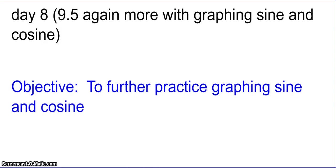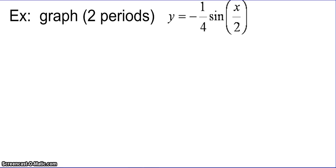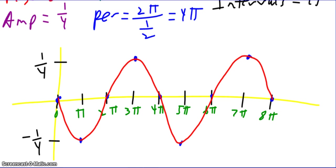Today we're going to look more at section 9.5 and practice more graphing. Graph two periods of y equals negative one fourth sine of x over two. Pause the video and unpause it when you're ready to check your work.